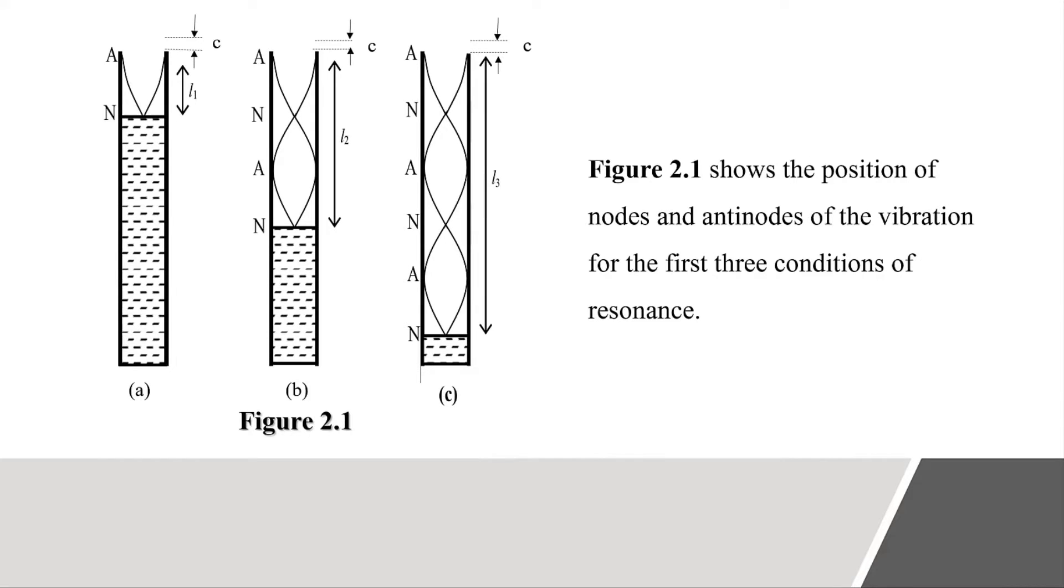Figure 2.1 shows the position of nodes and antinodes of the vibration for the first three conditions of resonance. Sound waves are longitudinal and are shown as transverse in order to create a clear picture of what is happening.